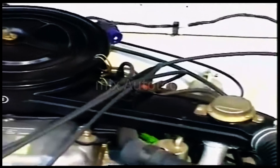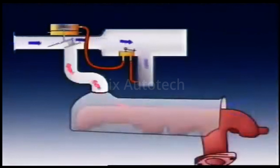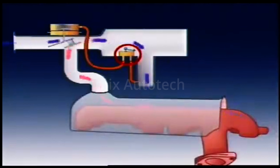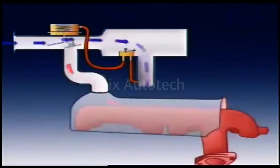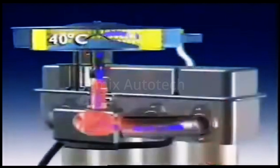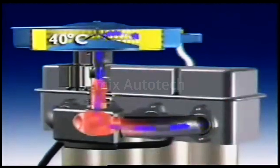Carburetors meet emission standards by maintaining accurate mixture control over a full range of engine conditions. To achieve this, most carburetors require an air supply at constant temperature. A heated air inlet system uses hot air collected from near the exhaust manifold and mixes it with outside air. One control system uses a temperature-sensitive valve inside the air cleaner that operates a flap, blending hot air with cool air so that the carburetor receives air at about 40 degrees Celsius, regardless of outside air temperature.